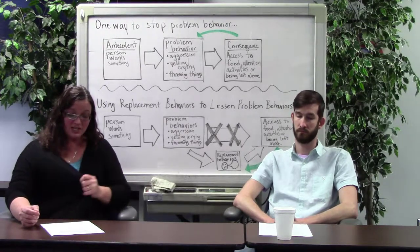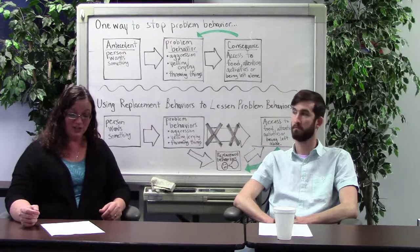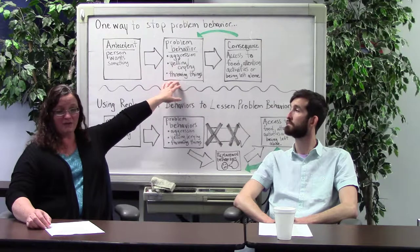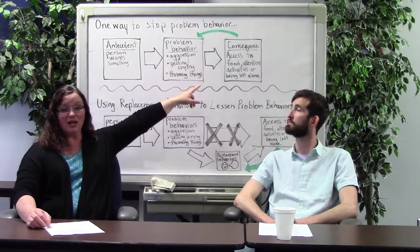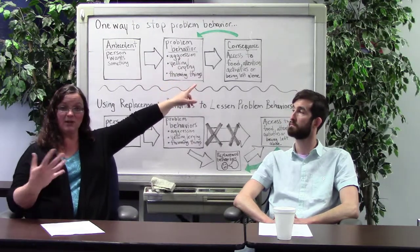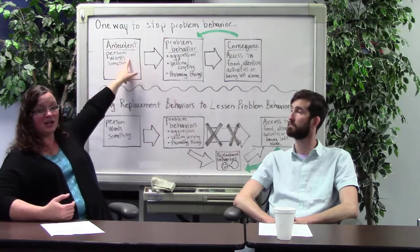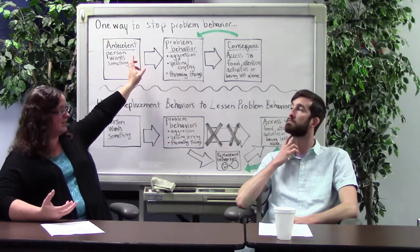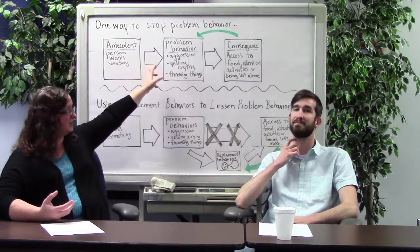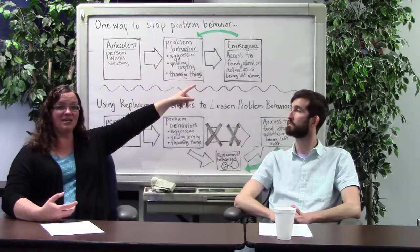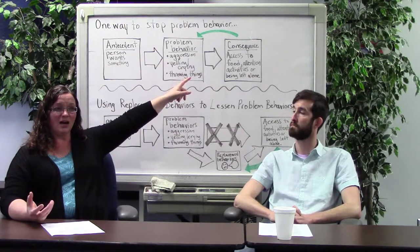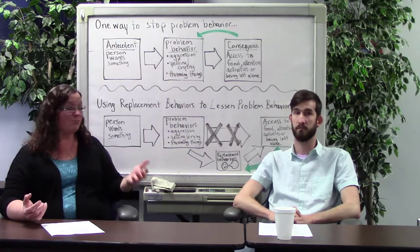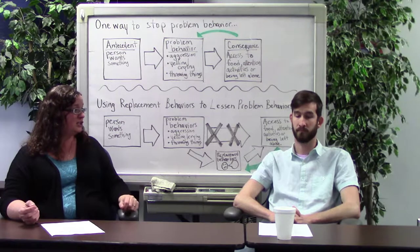If he screams and punches at you, so you start adjusting the TV channel, the screaming and punching is the problem behavior here. The consequence would be adjusting the TV channel, so giving him what he wants. The consequence is that you change the TV channel and it makes it more likely that he's going to hit and punch when he wants the channel changed again.